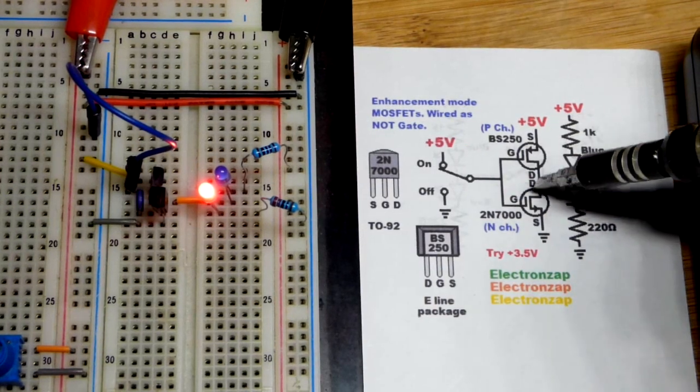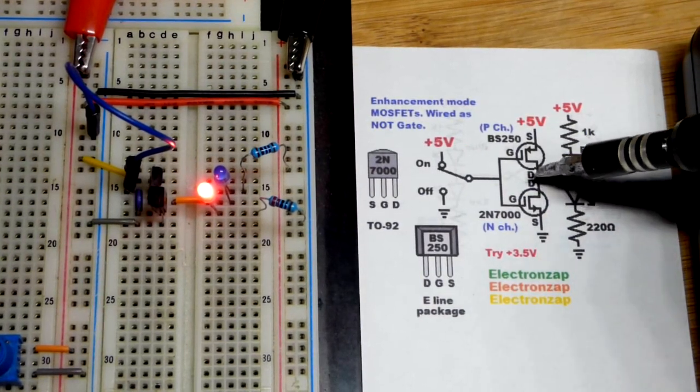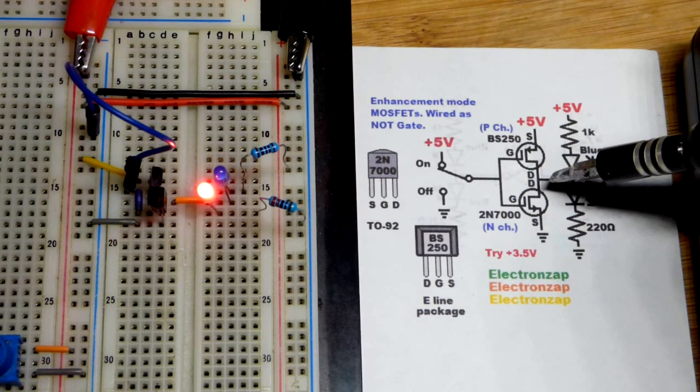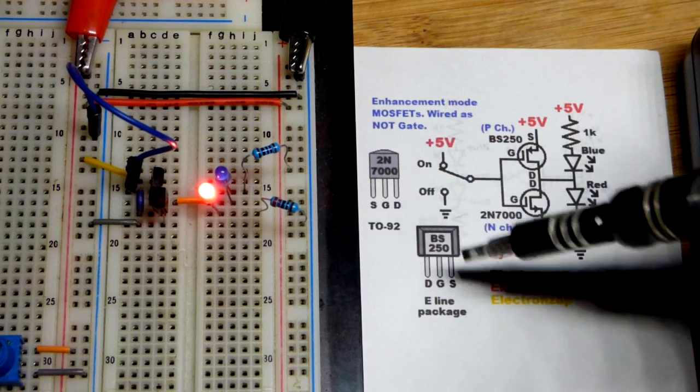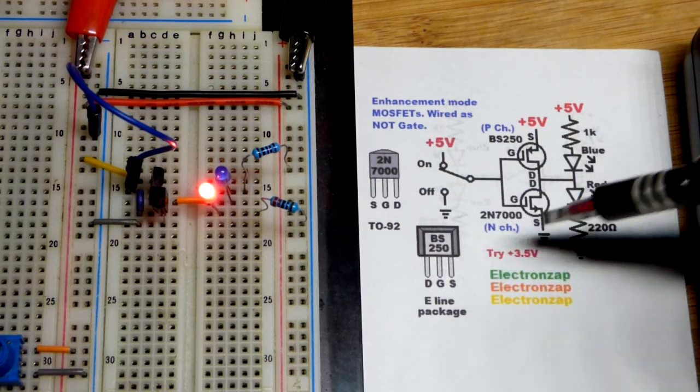So now in this video we're going to look at one of the best ways to combine an N-channel and a P-channel enhancement mode MOSFET. So what we have here is the N-channel 2N7000, they're both enhancement mode, and the P-channel BS250.